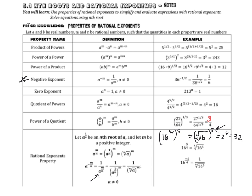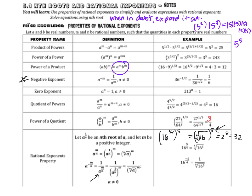When in doubt, expand it out. If you're not sure whether to add or multiply, just expand it. For example, 5 squared times 5 to the 3rd — 5 squared means 5 times 5, and 5 to the 3rd means 5 times 5 times 5, so altogether we have five 5s, confirming we add the exponents. Similarly, 5x squared means 5x times 5x, which is 25x squared — expanding it out helps you remember that the exponent on the outside applies to everything inside.